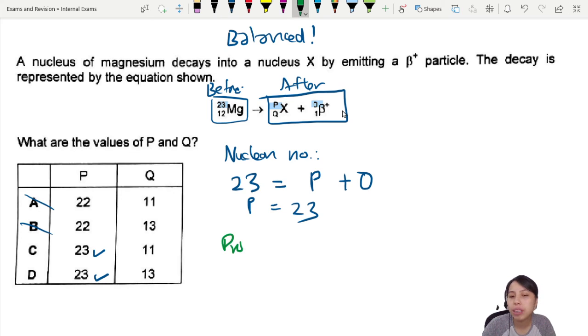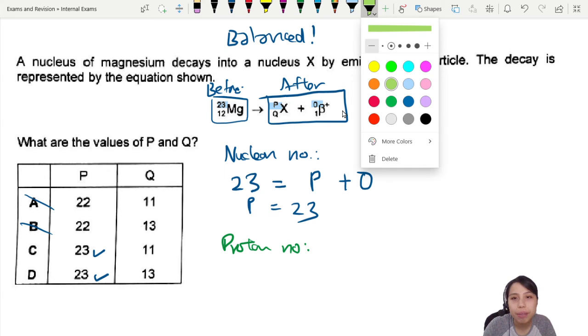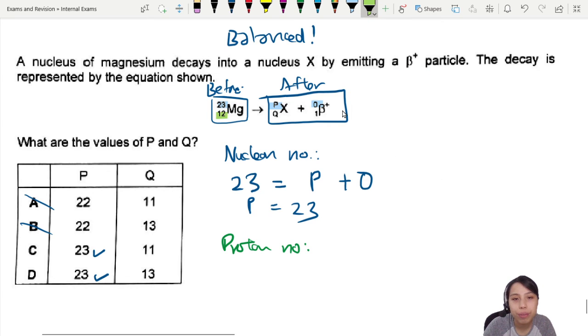So now we are going to look at the bottom part, which is 12 equals to Q plus 1. Let's write that down. 12 equals to Q plus 1. So what is Q? Q should be 12 minus 1. 11. So 11 is correct. Best choice gives us C.